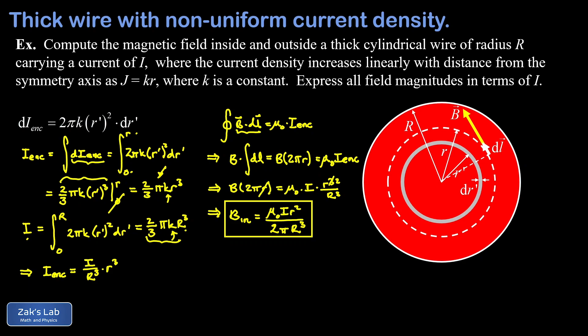For completeness, we also state the magnetic field outside the wire. An Amperian loop outside the wire encloses the entire current I, so applying Ampere's law is trivial: the left-hand side is again B times 2πr, and on the right-hand side the enclosed current is just the total current I. We end up with the classic result B_out equals μ₀ I divided by 2πr — the same result as for a thin wire and for the previous thick wire with uniform current density.